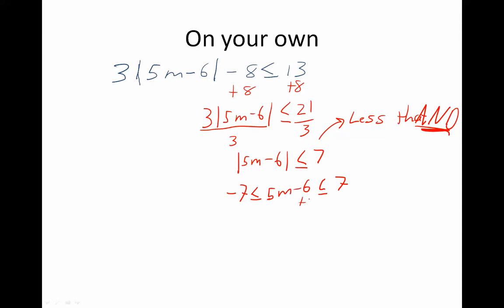And then we need to solve this. Add 6 to all three parts gives us negative 1 is less than or equal to 5m is less than or equal to 13. And then I need to divide by 5. We end up with negative one-fifth is less than or equal to m is less than or equal to thirteen-fifths.